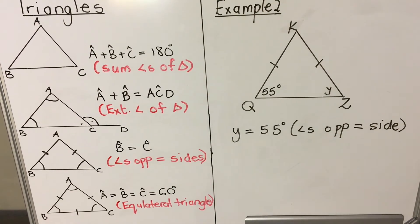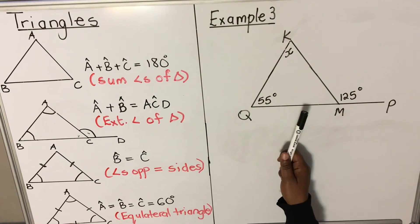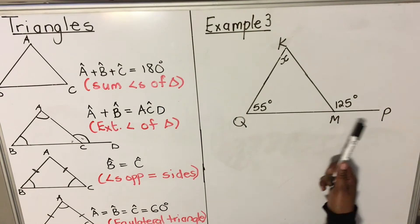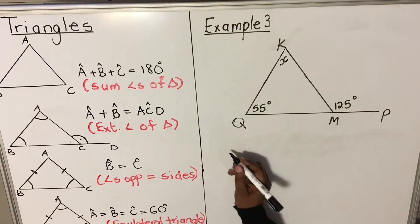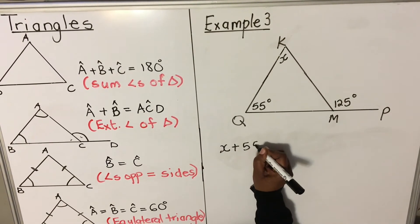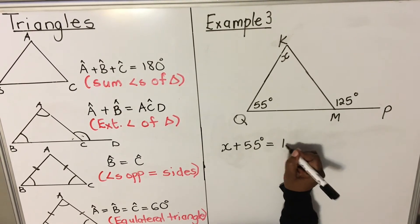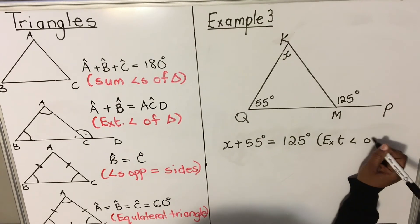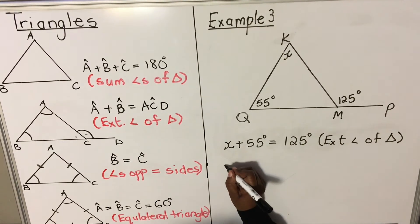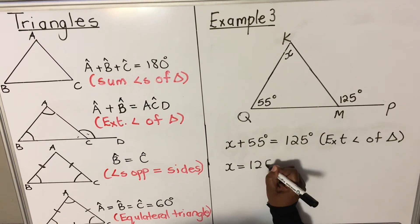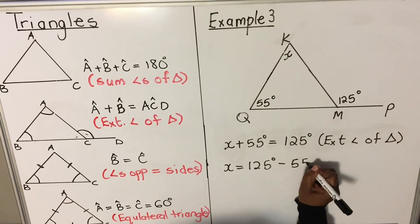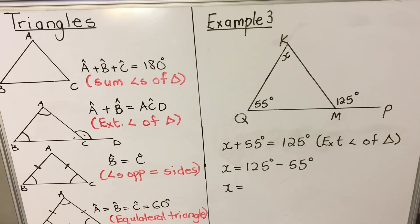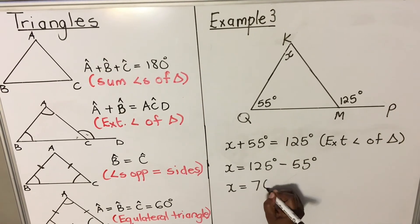In example three, triangle KQM has an exterior angle: angle KMP. The exterior angle equals the sum of the two opposite interior angles. So x plus 55 degrees equals 125 degrees, and the reason is: exterior angle of a triangle. Taking 55 to the other side: x equals 125 minus 55, so x equals 70 degrees.